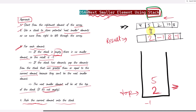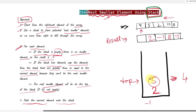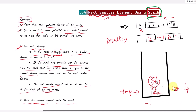Next we work with the element 4. The stack is not empty so we check if the stack top is greater than or equal to 4. The value 5 is greater than 4 so we pop it. The new top element is 2, which is not greater than or equal to 4, so 2 is the next smaller element for the value 4. The result will be 2, and this gives us our complete resultant array.